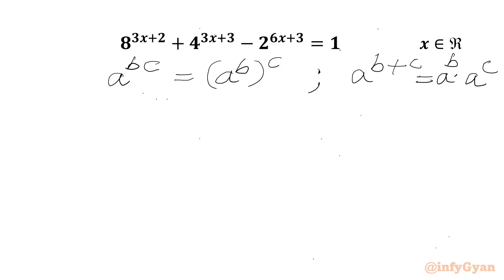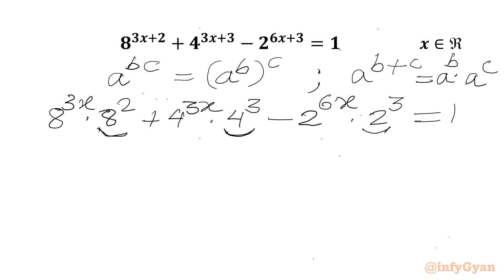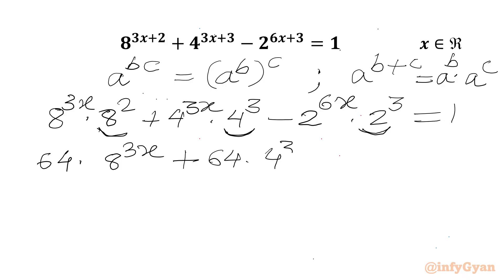Applying these properties, we get 8^(3x) times 8² plus 4^(3x) times 4³ minus 2^(6x) times 2³ equal to 1. Now 4³ is 64, 8² is 64, and 2³ is 8. So we can write the equation as 64 times 8^(3x) plus 64 times 4^(3x) minus 8 times 2^(6x) equal to 1.